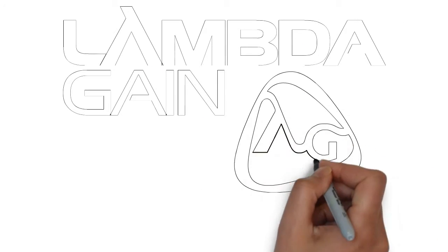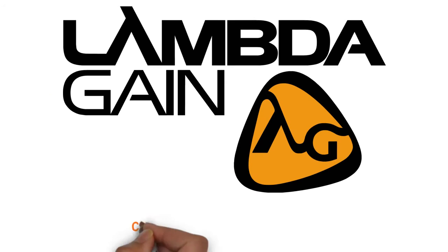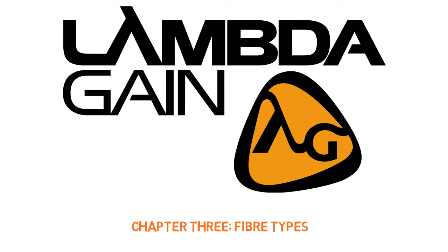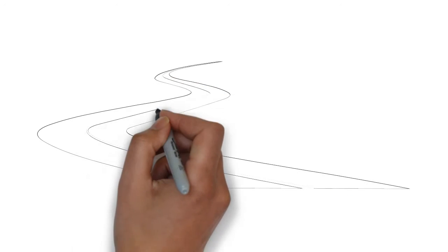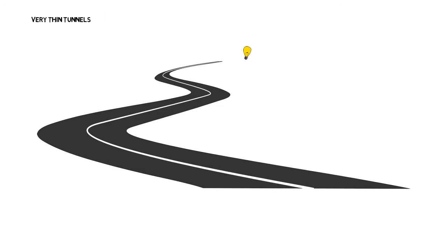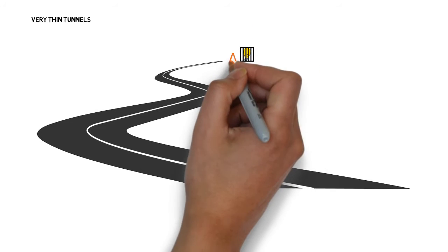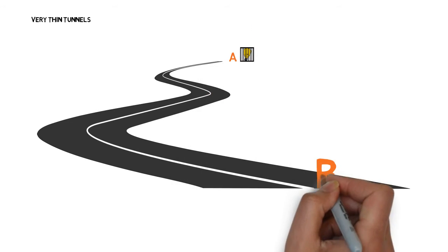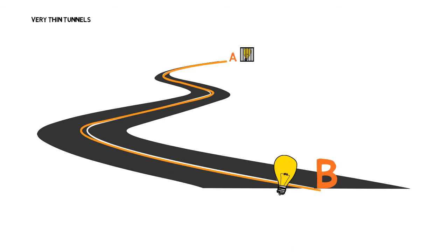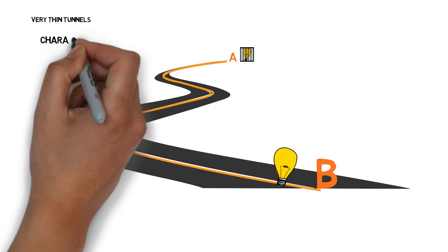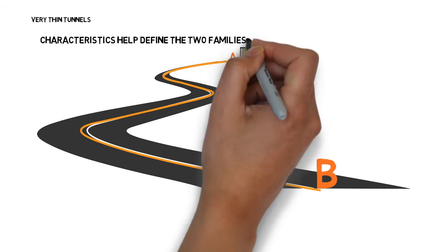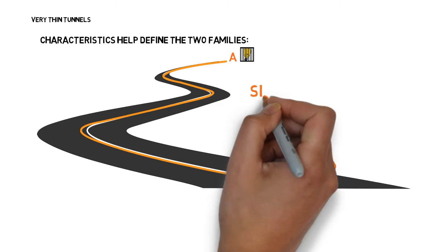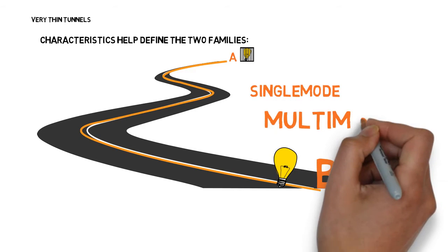Welcome to the LambdaGain Learning Center, Chapter 3: Fiber Types. As we saw in the last chapter, fibers act as very thin tunnels which trap optical signals and transmit them from one end to another. They also possess a set of characteristics which help define them. These characteristics help classify every fiber as being either single mode or multi-mode.